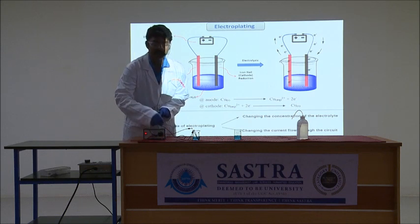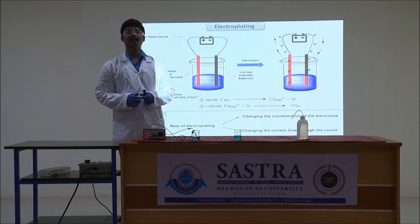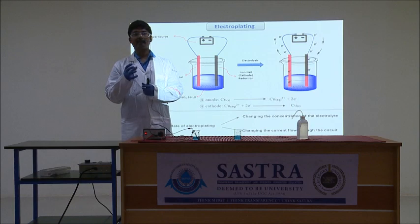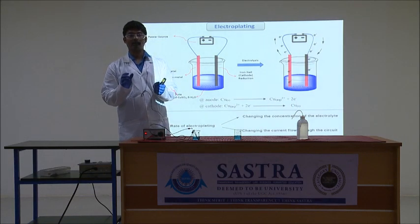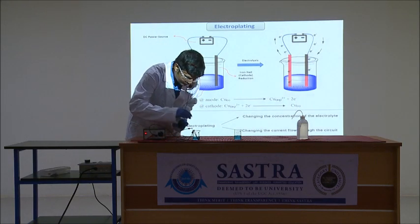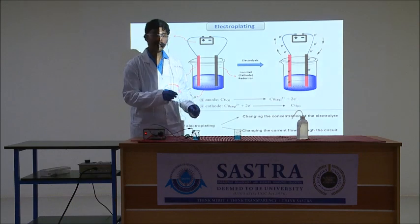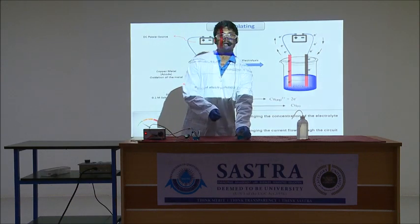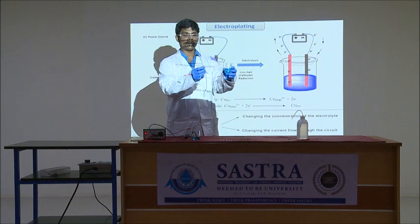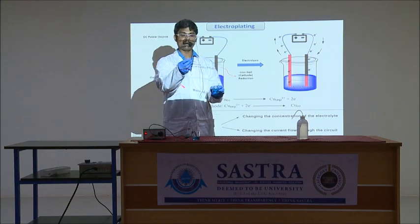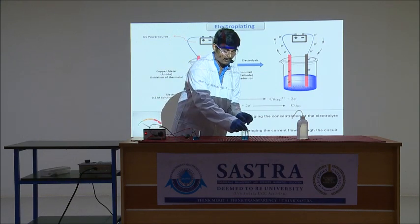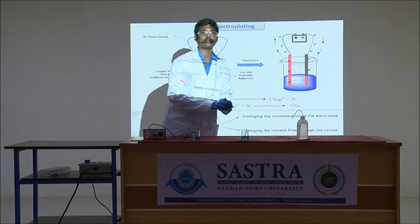We can switch on the power source for electrolysis. The regulator can be adjusted to increase or decrease the rate of current between the electrodes. On the other hand, for electroless plating, we need only a copper sulfate solution and an iron nail — we simply dip it into the solution without connecting to any power source.